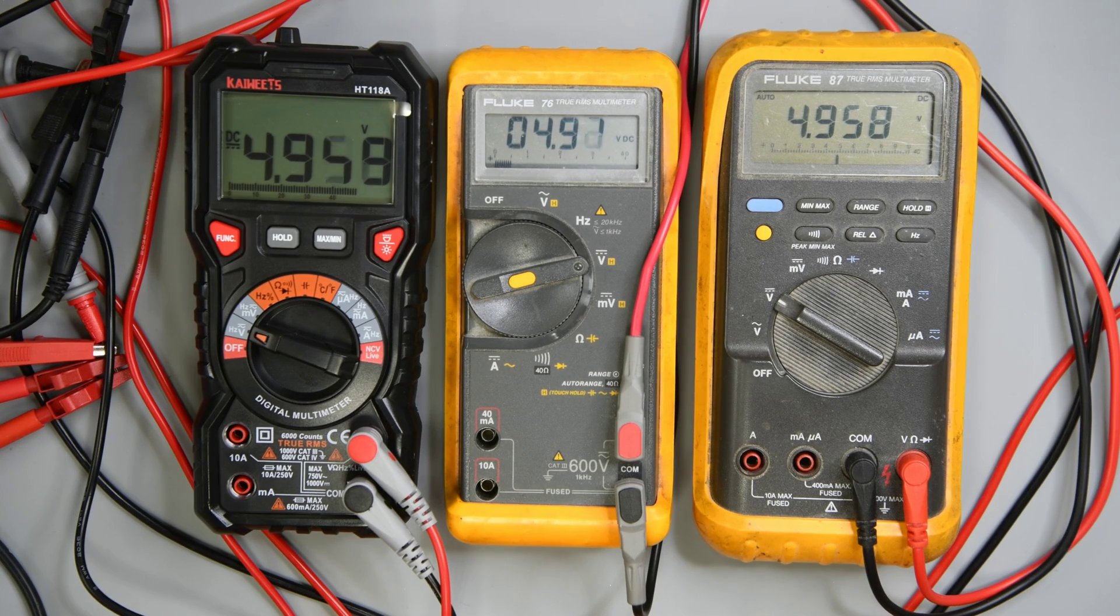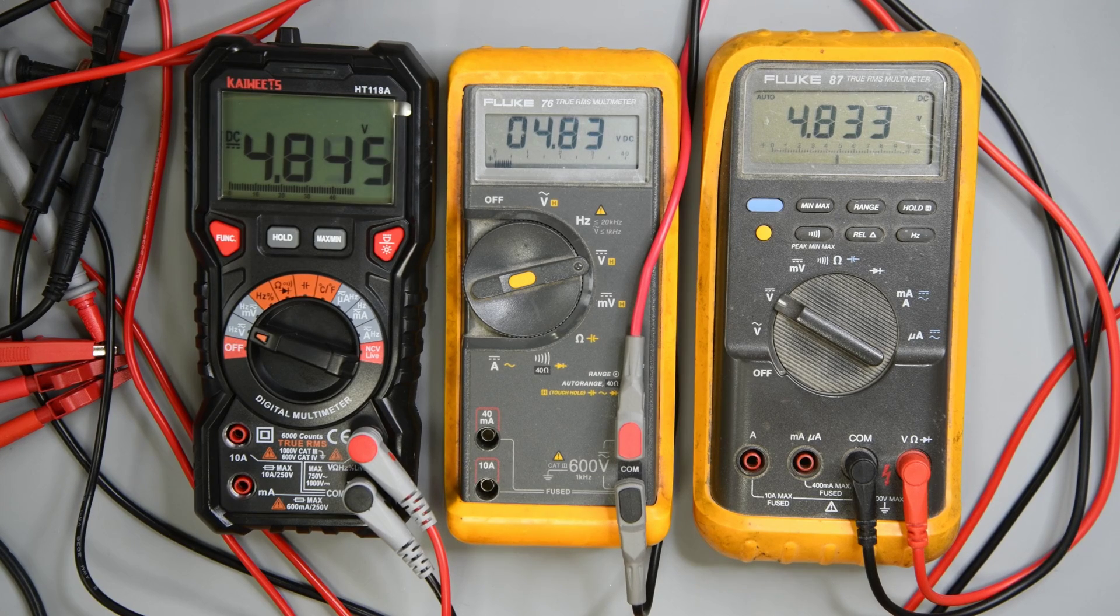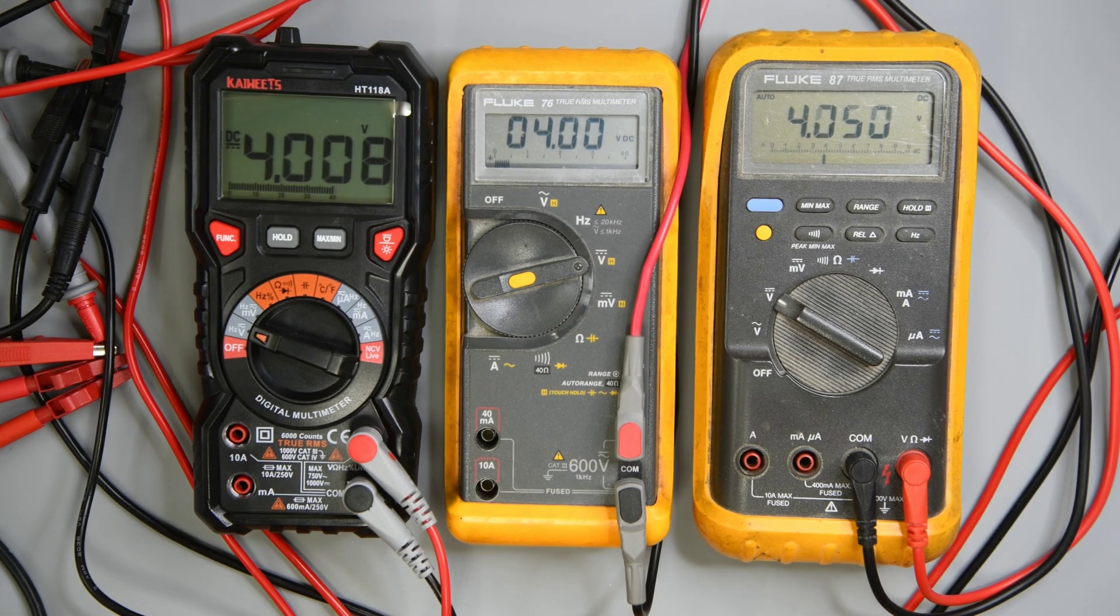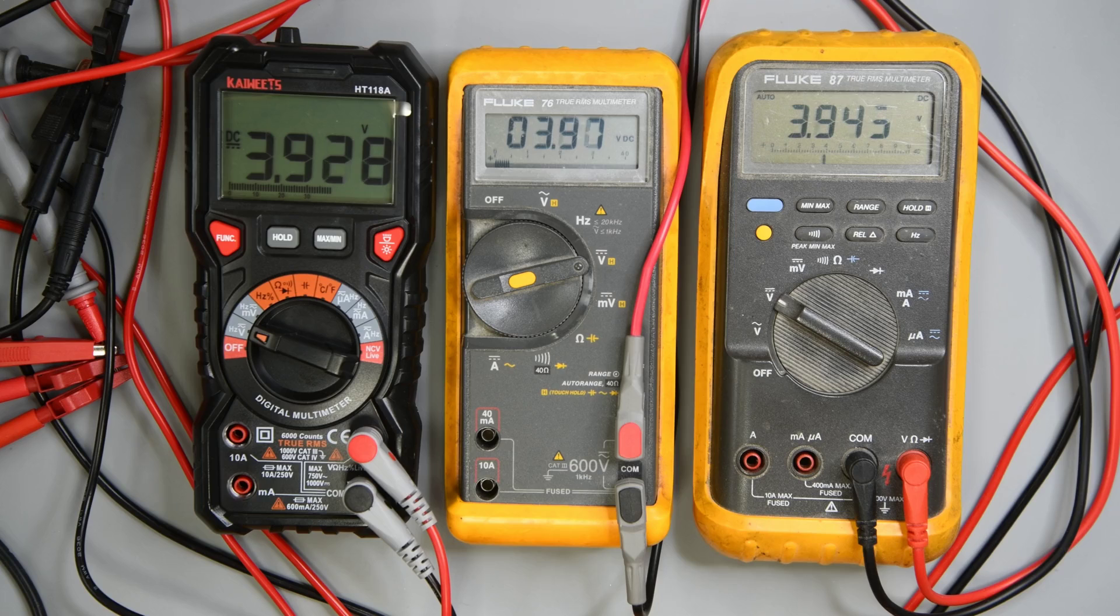The Fluke 76 is a 4000 count meter. This 87 is 4000 count in normal mode and 20000 count in high res mode. Update is quite slow in high res mode, which is what I have it in now. I'm very pleased with the accuracy of that. It's better than I was expecting. Quite a bit better.